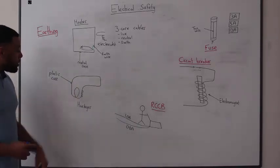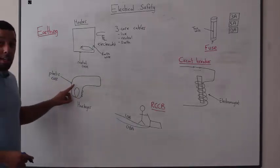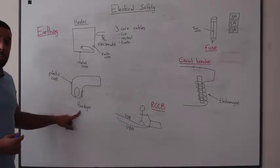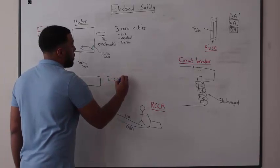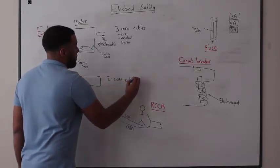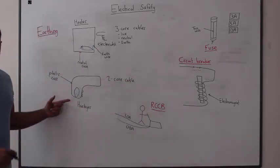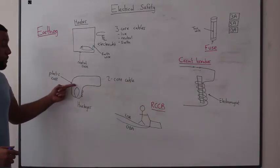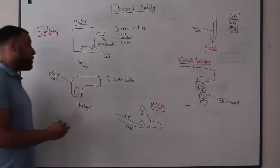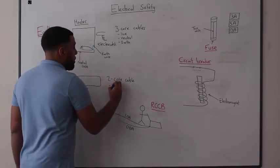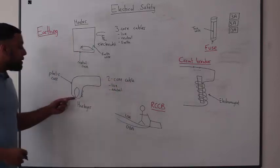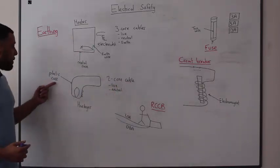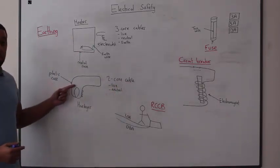For appliances that have a plastic case, and I've used the example of a hair dryer, we only need a two-core cable. The only two cables that are used in an appliance like the hair dryer would be the live wire and also the neutral. We have no need for an earth wire if the appliance has a plastic case.